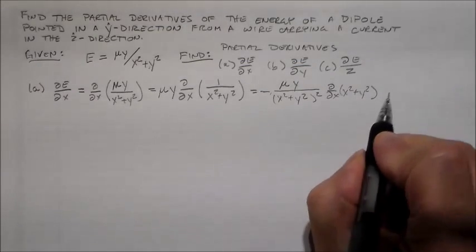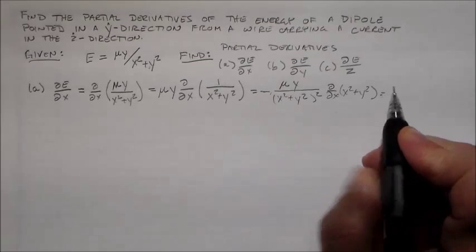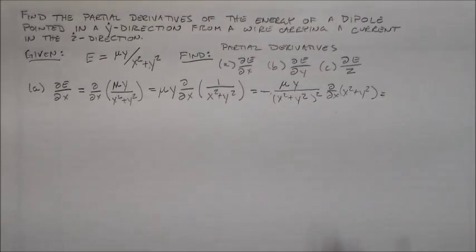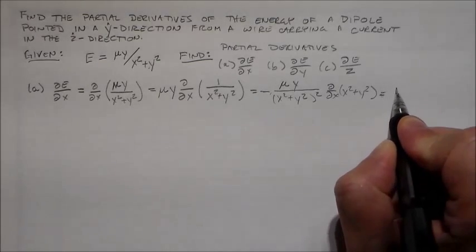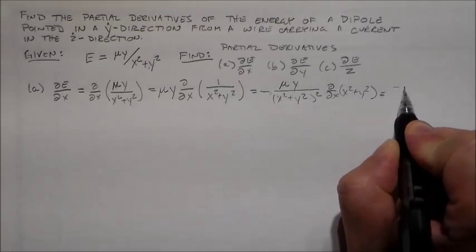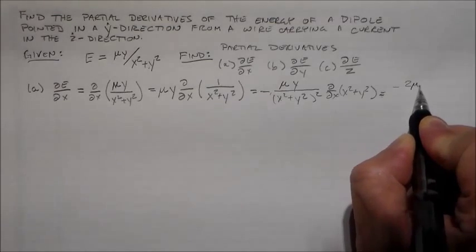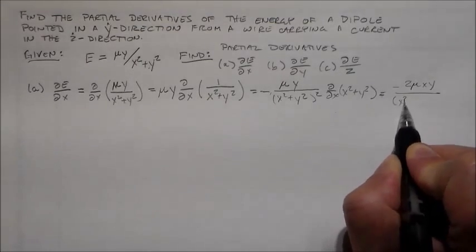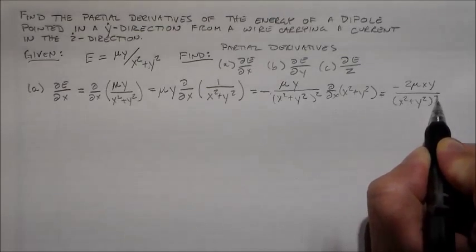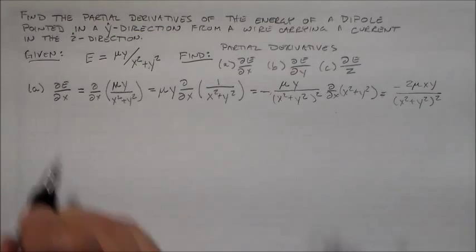x squared plus y squared. Alright, how close am I? I'm perfectly fine. So the derivative of x squared plus y squared, that is just 2x. So we've got minus 2μxy over x squared plus y squared squared. Simple enough. Nothing to it.